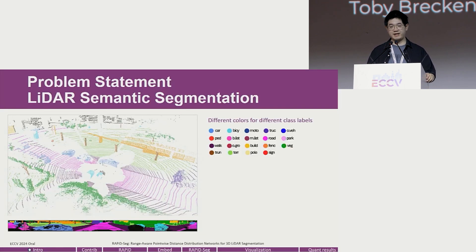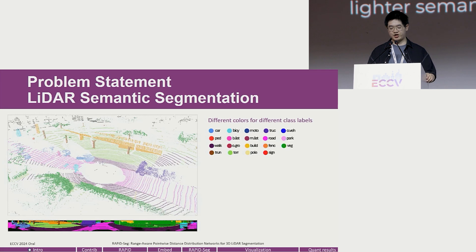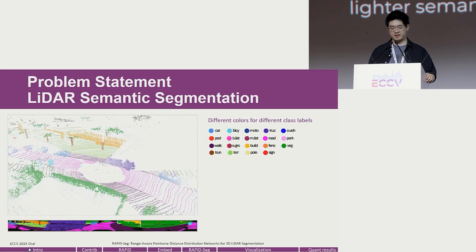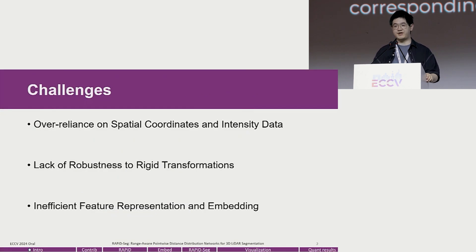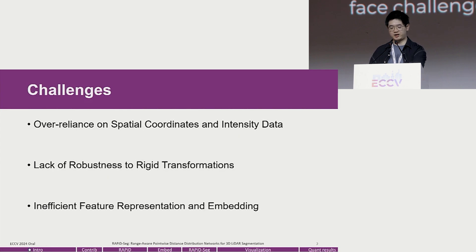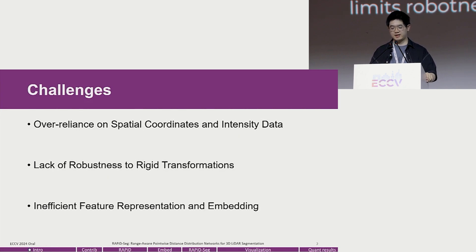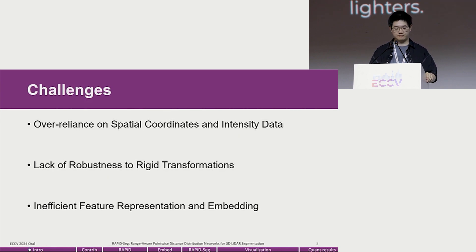Our work focuses on LiDAR semantic segmentation. It partitions a point cloud into segments, with each segment corresponding to different objects based on semantics. Previous methods often face challenges due to over-reliance on coordinates and point intensity, which limits robustness to transformations like rotations and translations, weakening feature representation and resulting in poor segmentation in noisy and sparse LiDAR data.